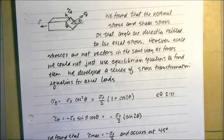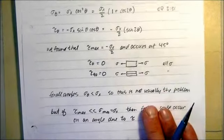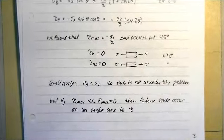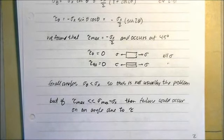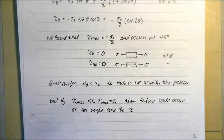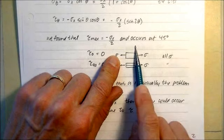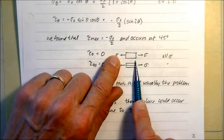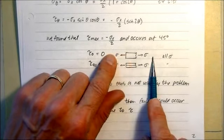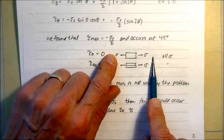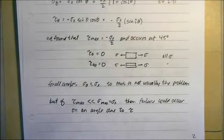We also found that the maximum shear stress is half of the maximum axial stress, and that occurs at a 45-degree angle. So you can see that if you're pulling on a member and the angle is zero — meaning straight up and down — then all we're talking about is straight axial stress, sigma. There is no shear stress on that axis.